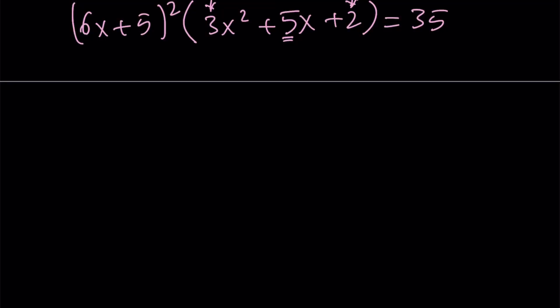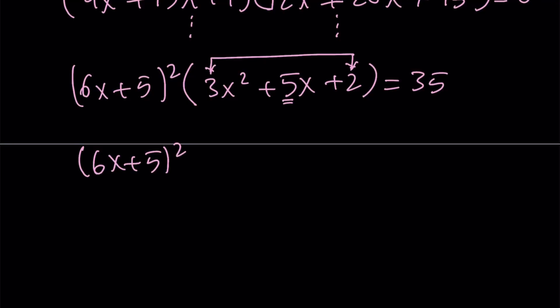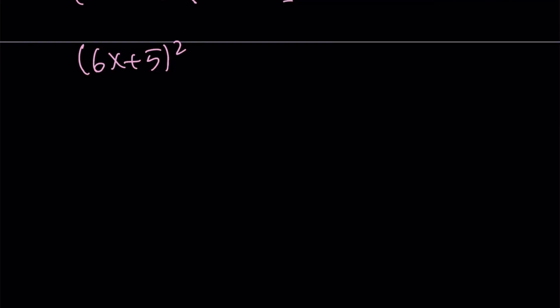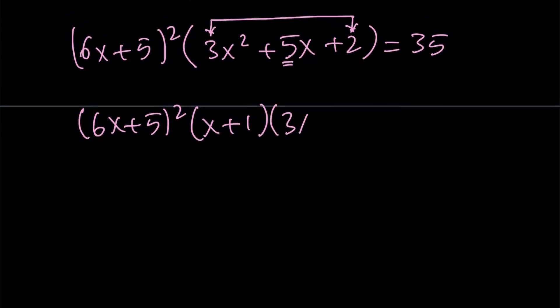So we can write this as 6x plus 5 quantity squared. 3 plus 2 is equal to 5, therefore x plus 1 is going to be a factor. What happens to the other factor? Well, you can easily derive that. It's going to be 3x plus 2. And this is equal to 35. Now, here's the trick.